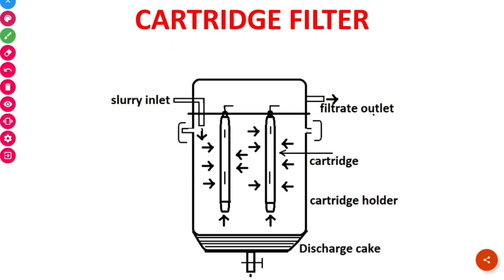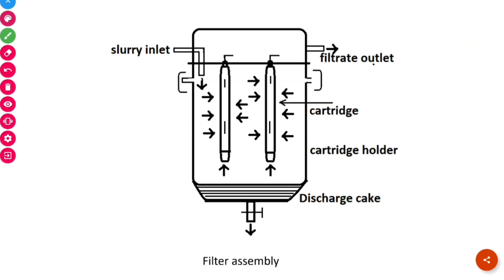Today, I am going to talk to you about cartridge filter. This is one of the equipment which is used for preparing particulate free solutions for parenteral and ophthalmic use. We are going to discuss about the principle, construction, working, advantages and disadvantages of this equipment. Before entering into the topic, I will explain all the important parts associated with the cartridge filter.